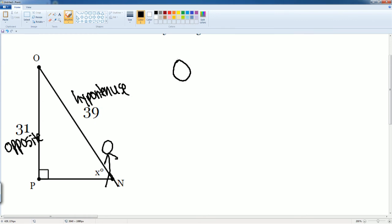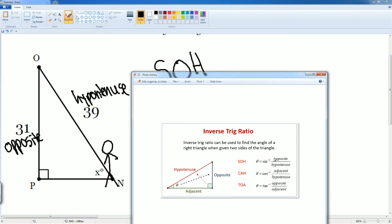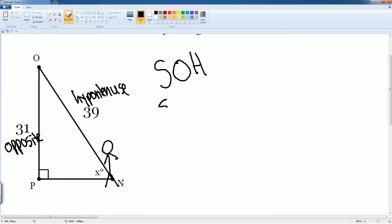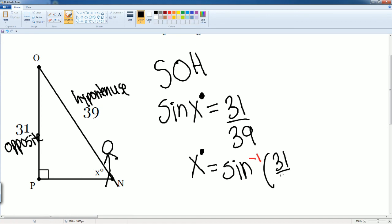And we saw this is O and H, and we know this should be SOH. Opposite over hypotenuse is your SOH. So we can now set it up. Sine of that angle, which is just X degrees is equal to the opposite, which is 31 divided by the hypotenuse, which is 39. To solve for the X, we have to use the inverse. So X degrees is equal to sine inverse. So to the negative one power, parentheses, 31 divided by 39.